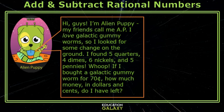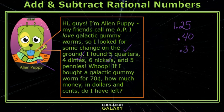Okay, I'll do a problem. Hey guys, I love galactic gummy worms — I'm eating one right now. So I looked for some change on the ground. I found 5 quarters, and I know that 5 quarters make $1.25, 4 dimes which is 40 cents, 6 nickels which is 30 cents, and 5 pennies which is 5 cents.